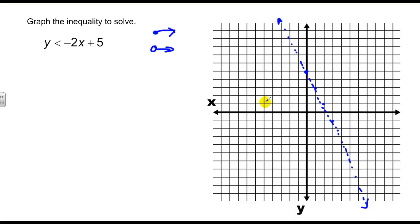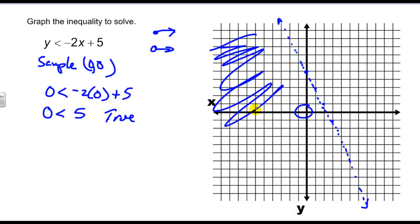And then what we have to do, since this is splitting my graph into two regions, I pick a sample point in one of the regions. Again, I like a sample point of zero, zero, so I'm going to plug my sample in and get zero is less than negative two times zero plus five. So I have zero is less than five, and I have to decide if that's a true or false statement. That's true. So every point in that region below the graph is going to work. So again, I shade in this region where my sample point was.